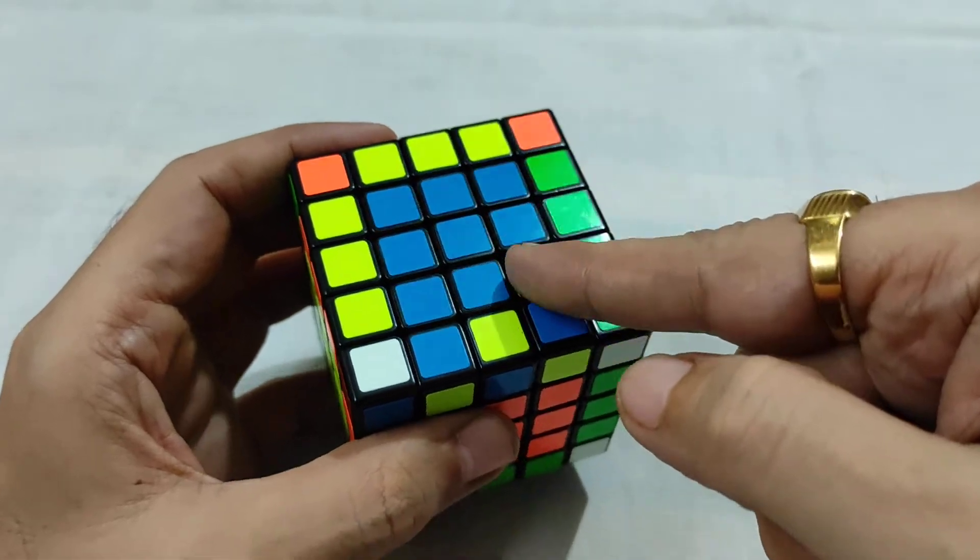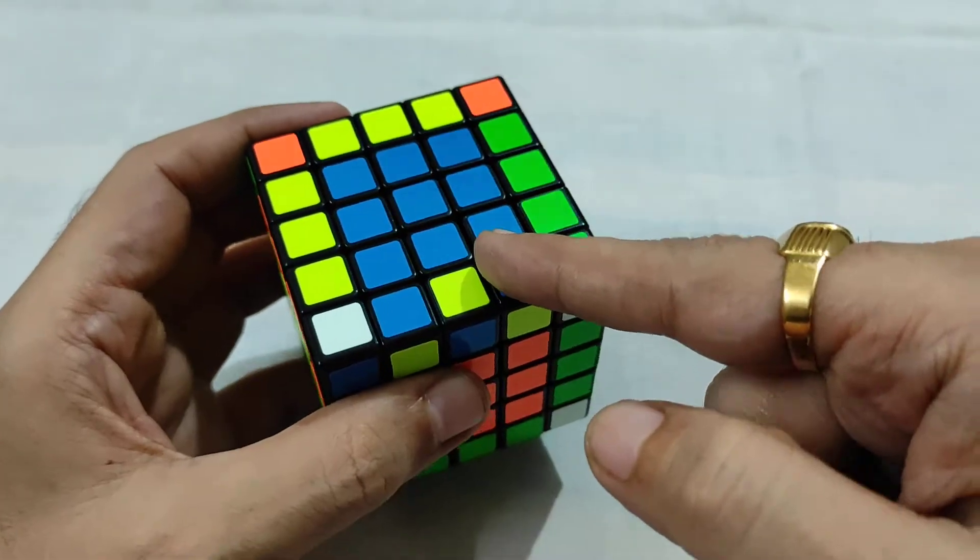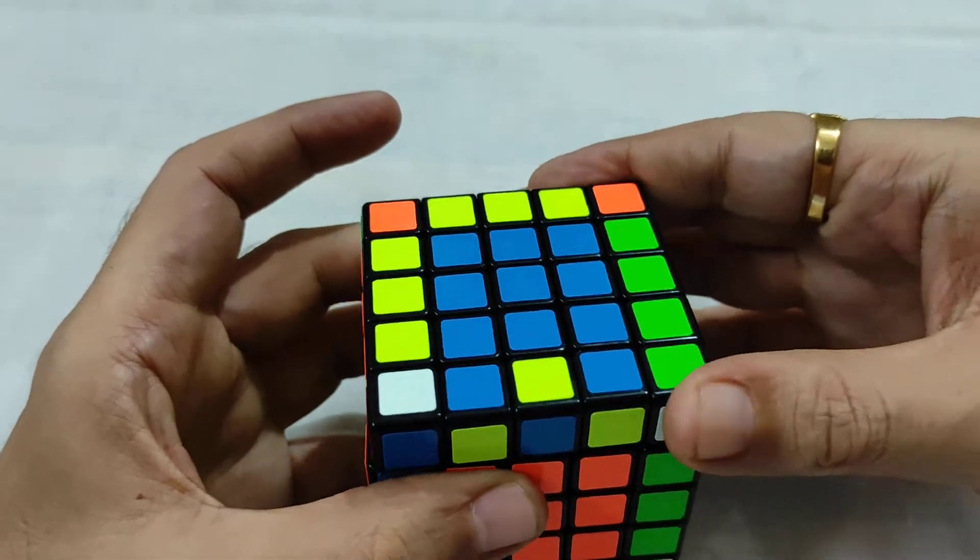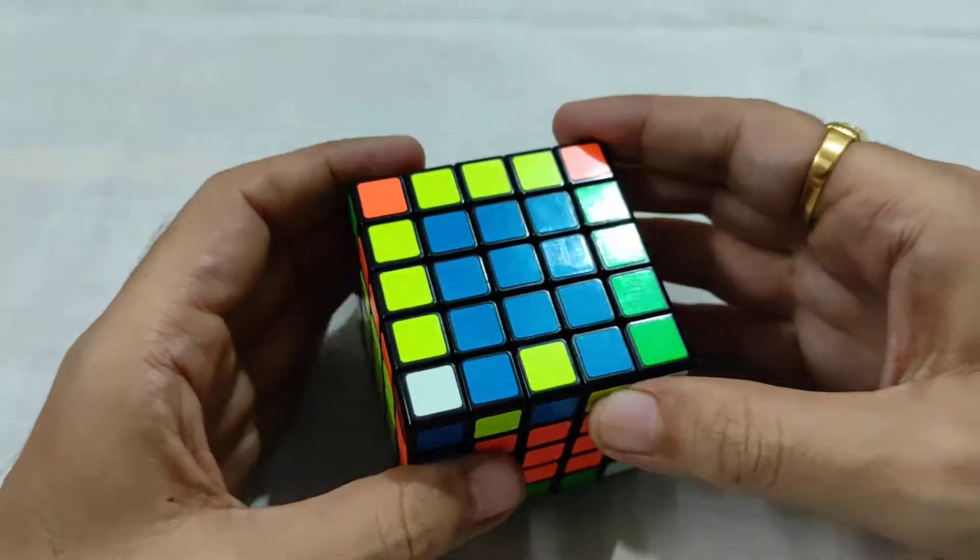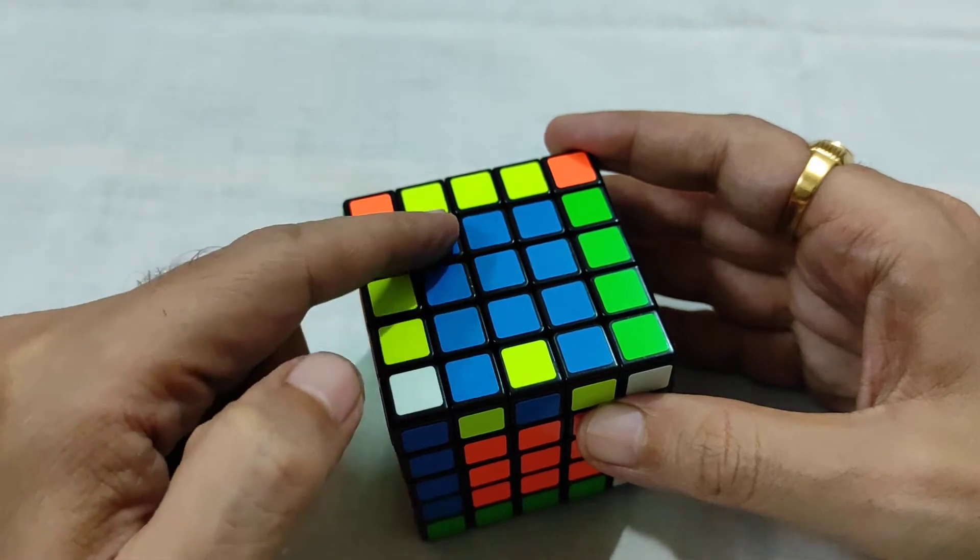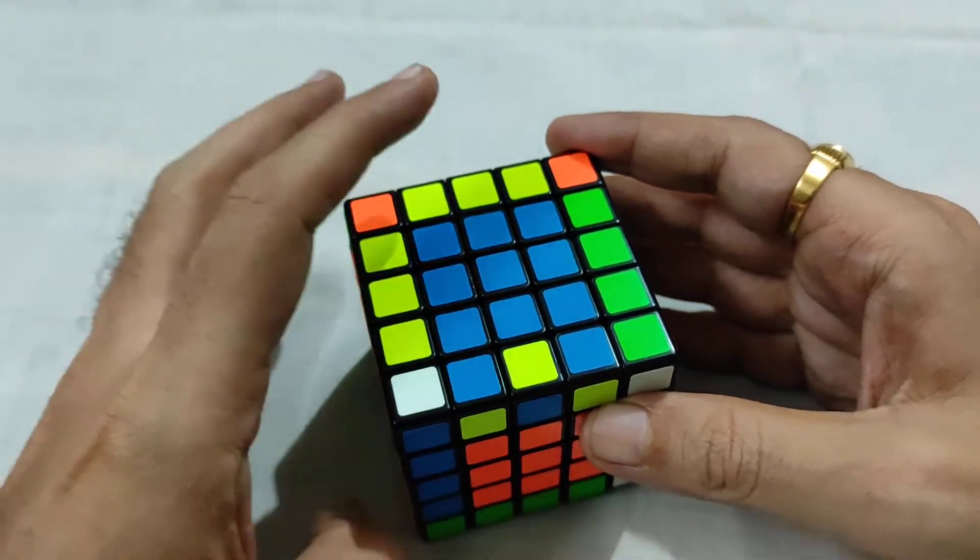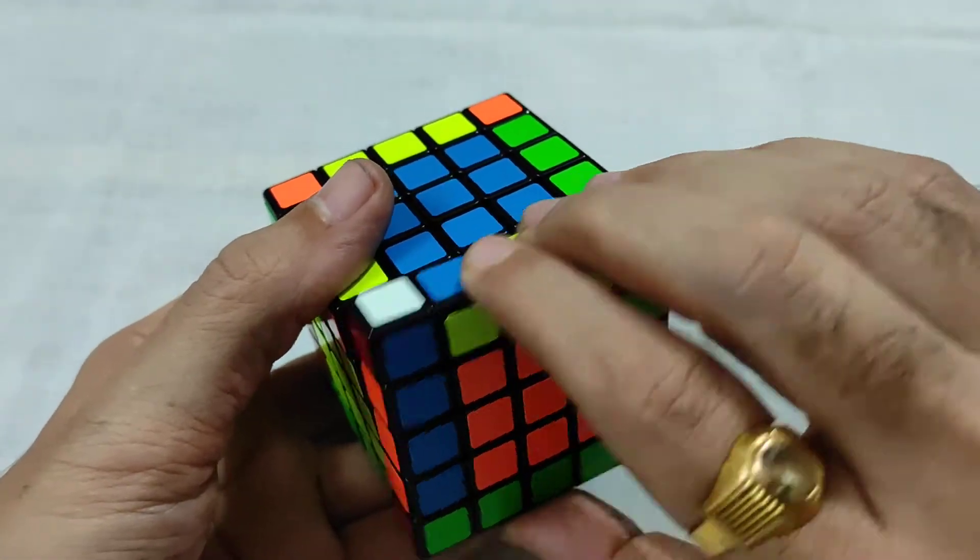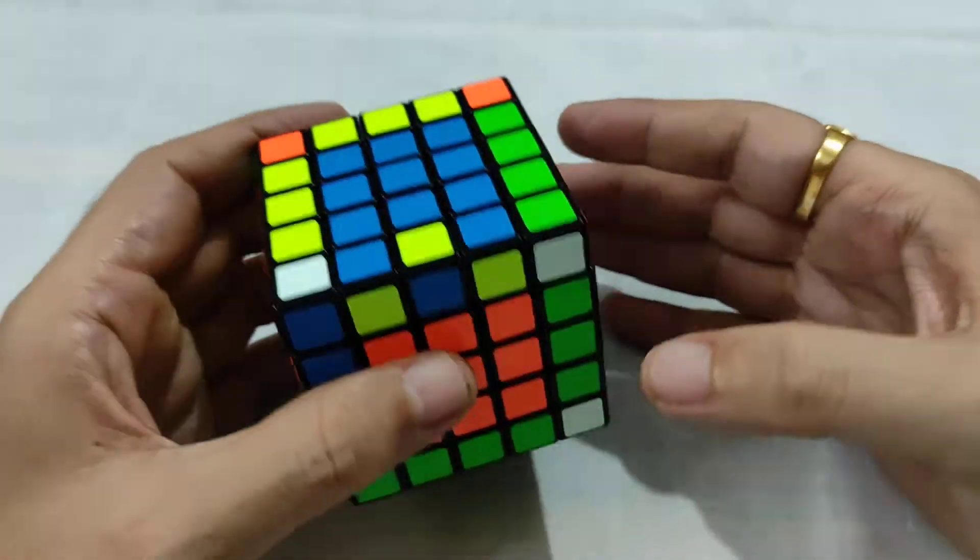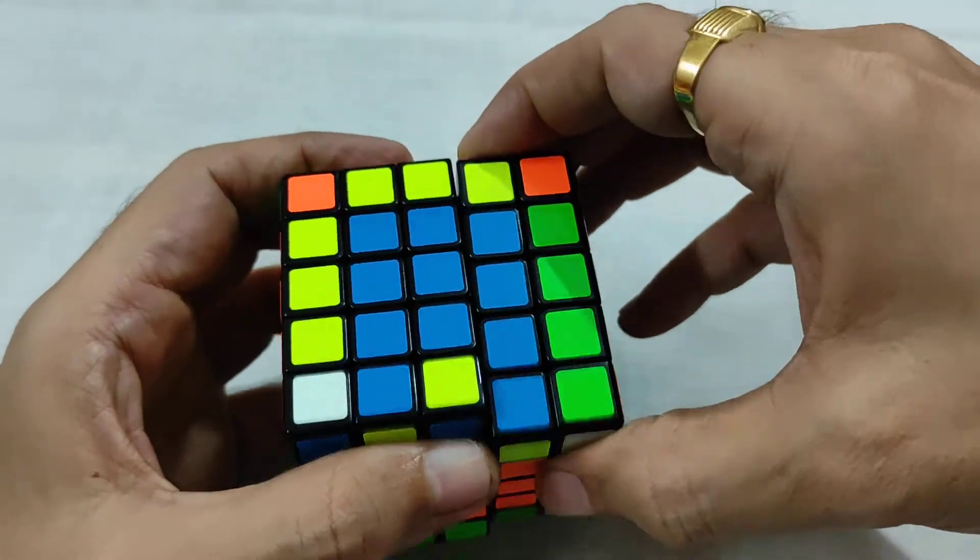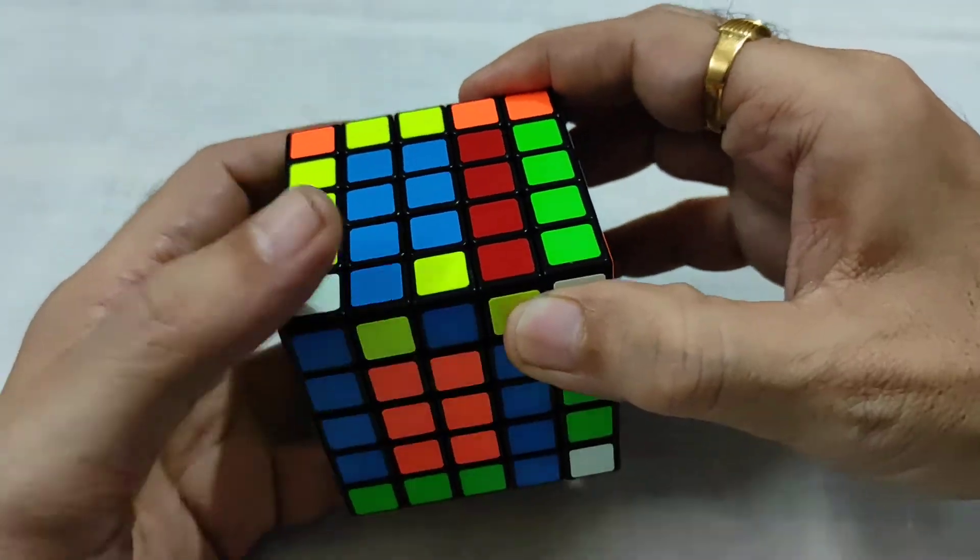Whenever I use middle right layer, we'll turn this top two times. Whenever we use this left middle layer, we'll turn this front two times. So I'll just show you how to fix it.